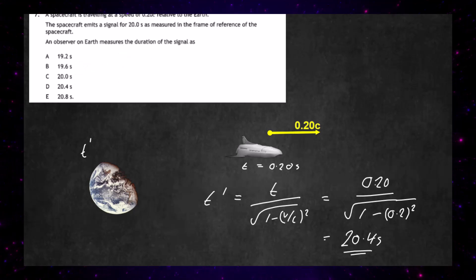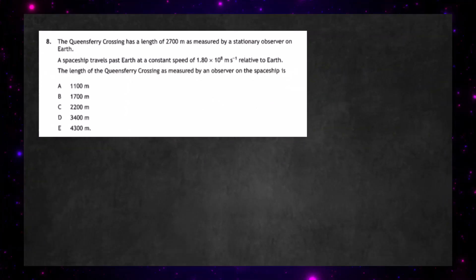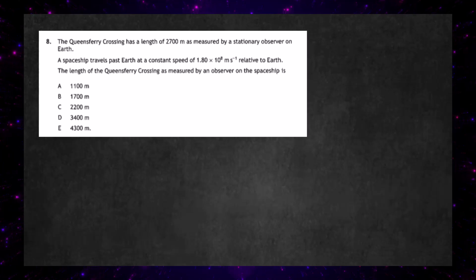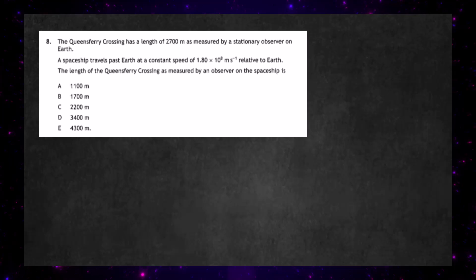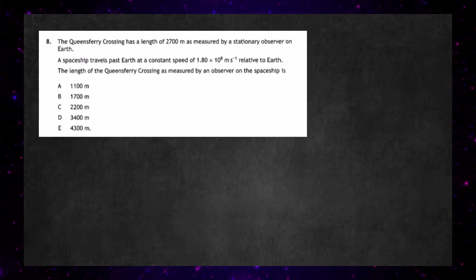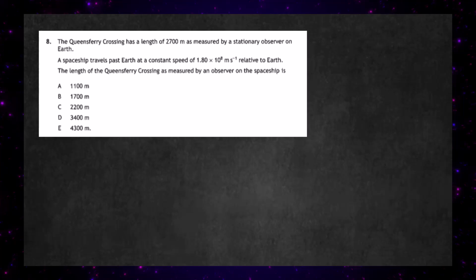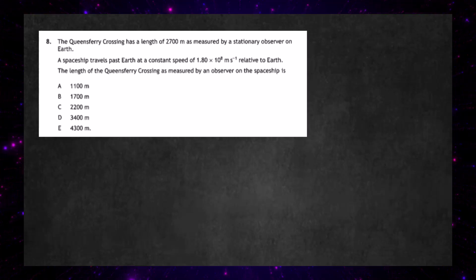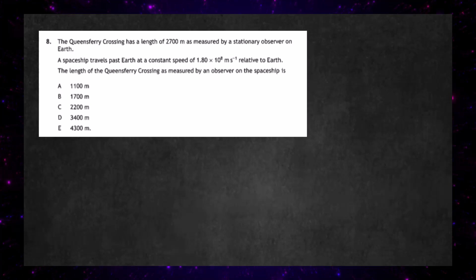Question eight from the multiple choice: the Queensferry Crossing has a length of 2700 meters as measured by a stationary observer on the earth. A spaceship travels past the earth at a constant speed of 1.80 times 10 to the power 8 meters per second relative to the earth. The length of the Queensferry Crossing as measured by an observer on the spaceship is — and we're given those choices.